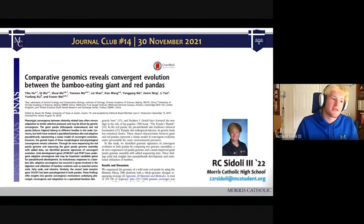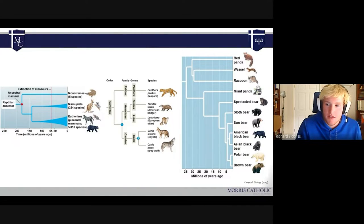R.C., take it away. So, this is comparative genomics reveals convergent evolution between bamboo-eating giant pandas and red pandas. These two species, well, they're both called pandas, aren't actually that closely related.